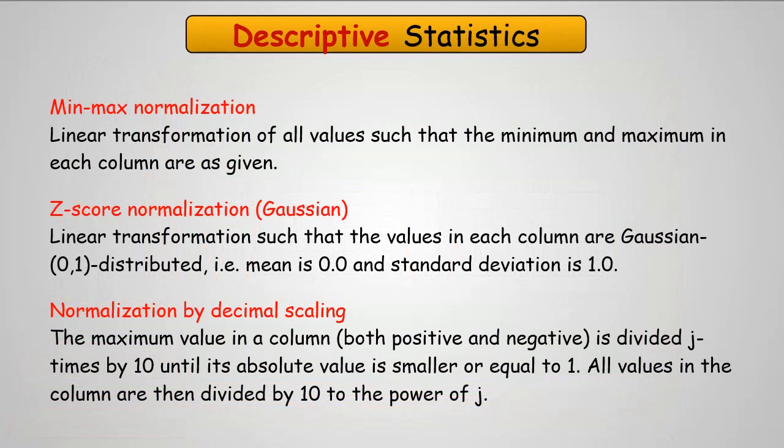KNIME is going to support built-in automatically three forms of normalization. The min-max is just a linear transformation where all the values, such that the maximum and minimum, are going to fall within that specific range. Another is Z-score normalization. It's also a linear transformation, but all the values are going to be a Gaussian distribution, which basically means the mean of the data set will be 0 and the standard deviation is going to be 1.